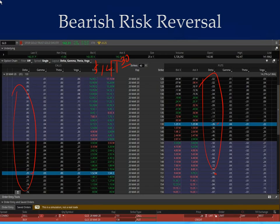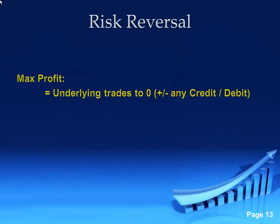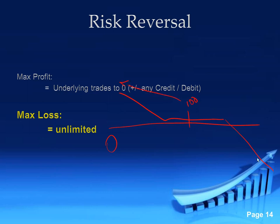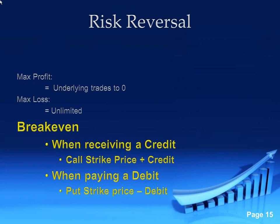Someone is asking if this is a collar in reverse. Yes — if you own the underlying, this would be a collar, because we're selling the call and buying the put. The bullish risk reversal would also be related to a collar. The way we're setting it up here is more for trading and hedging an overall portfolio. If you want to build it as a collar around a specific underlying — say you're long 100 contracts — you would need to hold it to expiration.